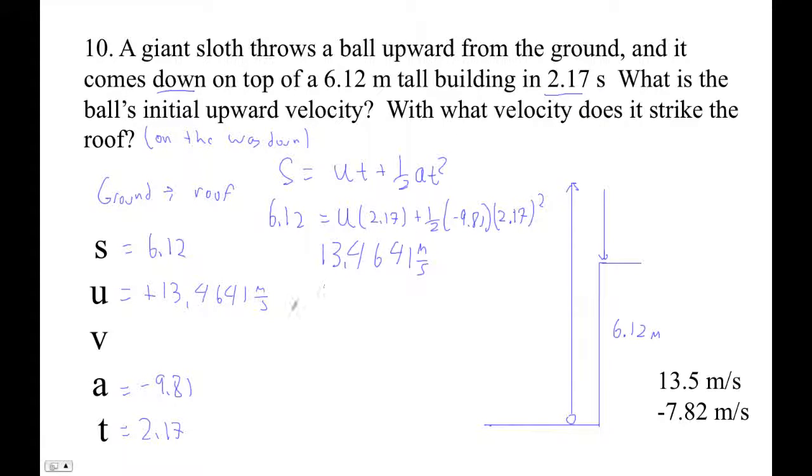And then it says with what velocity does it strike the roof? So I think what I'm going to do is use, I'll use V equals U plus A T. Okay, so final velocity is, oh, we don't know. All right, so V is equal to 13.4641 plus negative 9.81 times 2.17. Okay, here we go. So that guy plus negative 9.81 times 2.17. And it's negative 7.82.